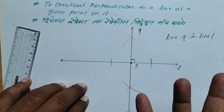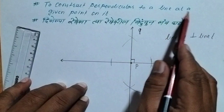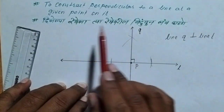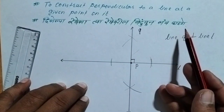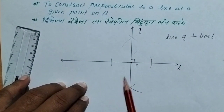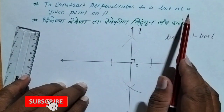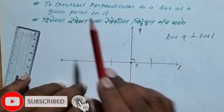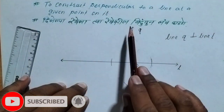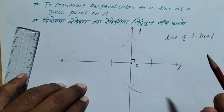This is the sign of perpendicular. Line Q is perpendicular to line L. In this way we have constructed a perpendicular to a line at a given point on it — point P lies on the line. This concludes the construction.